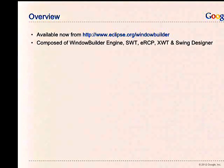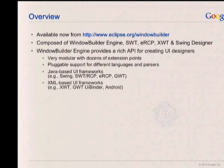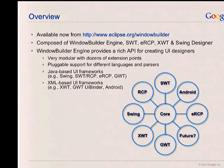You can get the Eclipse version at Eclipse.org/windowbuilder. What's available there is the Window Builder engine, which is a generic basis for building any kind of UI builder. On top of that, there's code for SWT, ERCP, XWT, and Swing development. Window Builder provides a very rich API for creating UI designers, very modular with dozens of extension points, public support for different languages and parsers — so you can use Java, you can use XML. We're certainly looking at it for Dart in the future.